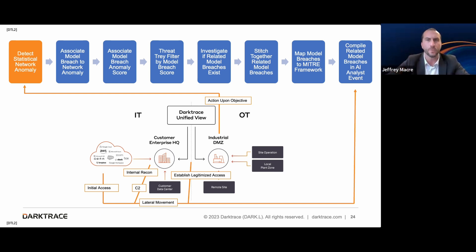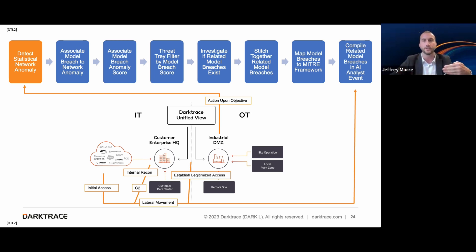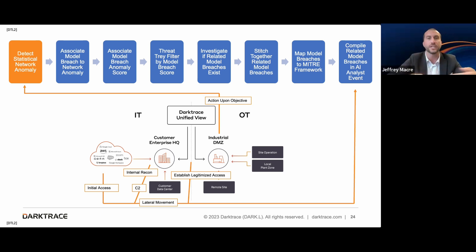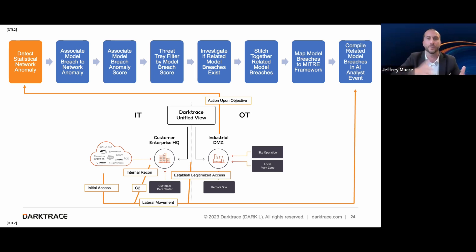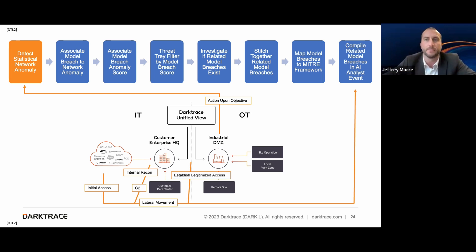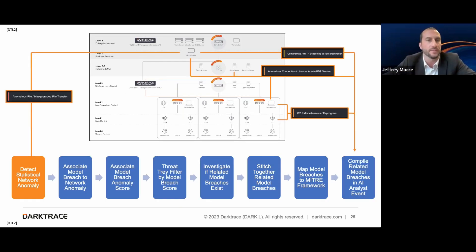From that, we actually correlate with any other model breaches. So there could be somebody accessing a site they've never been to before, and then a few moments later we see a compromise on that machine. From that machine we see RDP activity and lateral movement into the environment. We're going to stitch all of those alerts together and give you that as one additional incident, which is really fantastic.